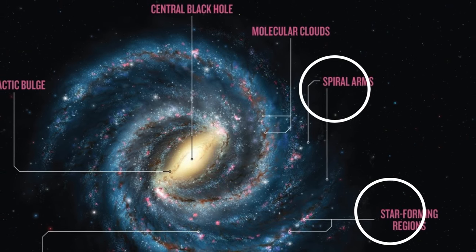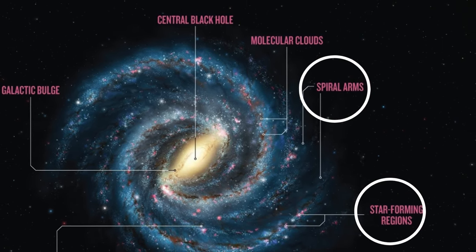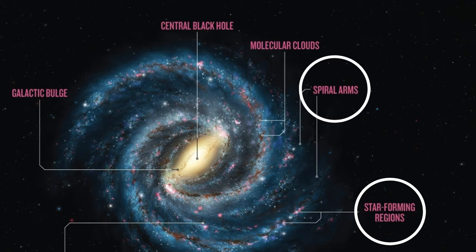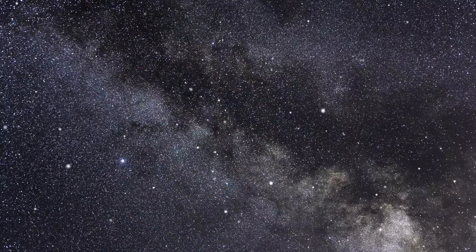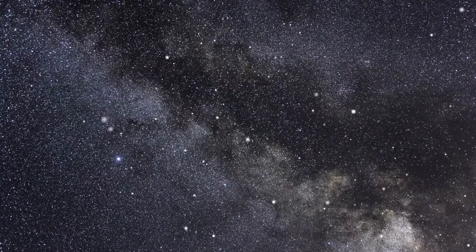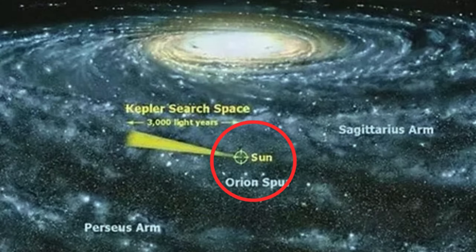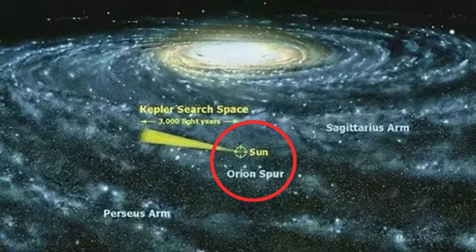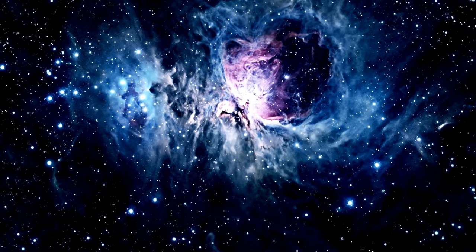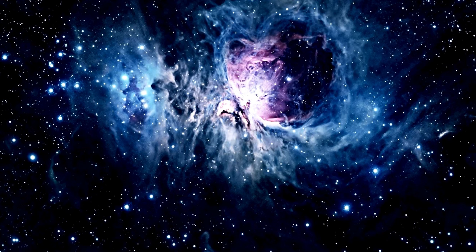As we move out from the center, we find the spiral arms, regions of intense star formation where new stars are born from vast clouds of gas and dust. Our solar system is located in one such arm, known as the Orion Arm or Orion Spur. It's a relatively calm and stable area, perfect for the development of life as we know it.